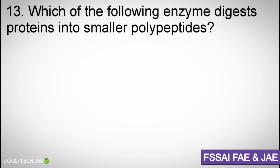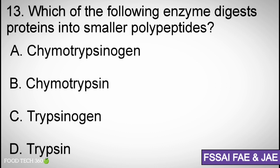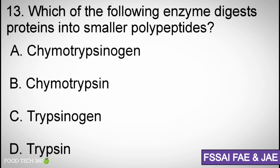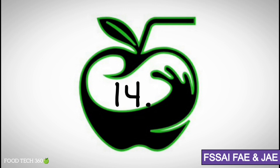Question number 13: Which of the following enzymes digests proteins into smaller polypeptides? Options: A. Chymotrypsinogen, B. Trypsinogen, C. Trypsin. Correct answer: D. Trypsin.